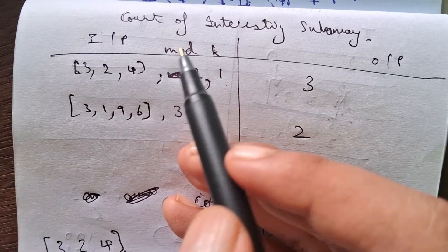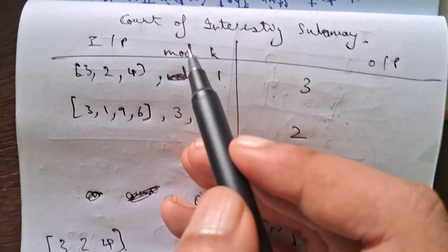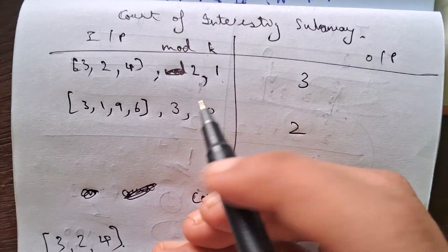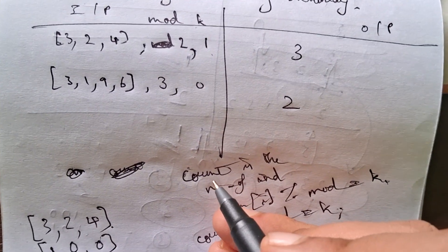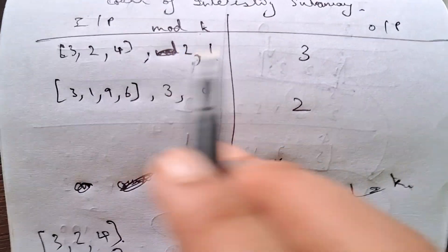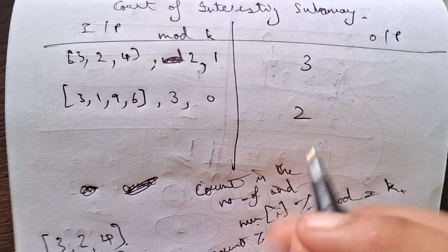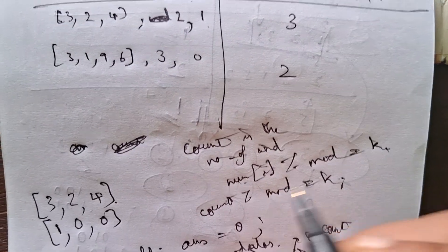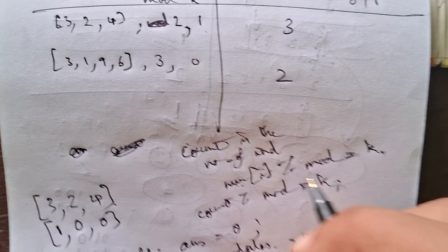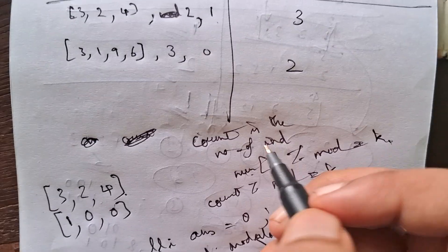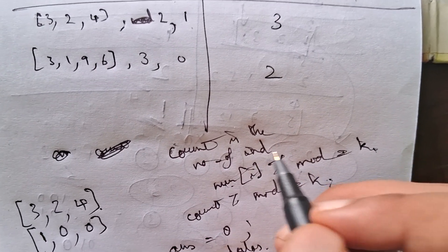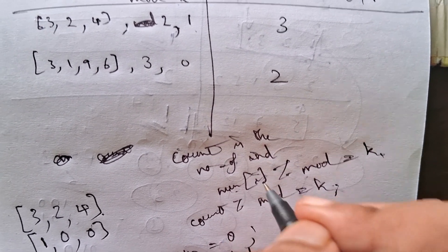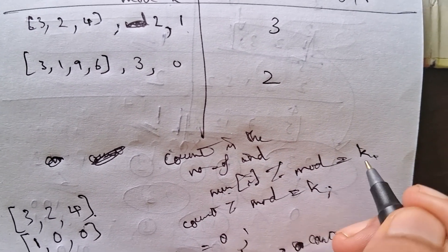The problem statement is simple: you are given an array, a modular value, and a k value. You have to find the number of subarrays for which the value of count modulo modulo equals k, where count is the number of indices in the subarray for which nums[i] mod modulo equals k.